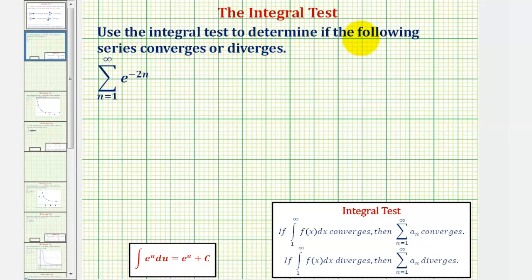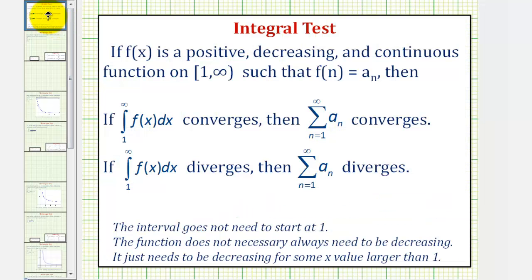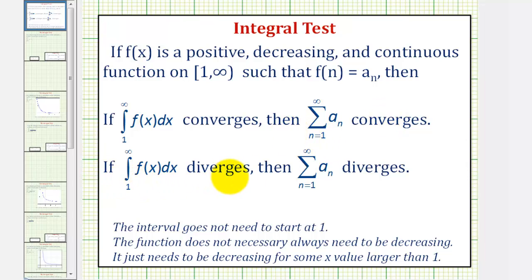We want to use the integral test to determine if the following series converges or diverges. Let's begin by reviewing the integral test. If f of x is a positive, decreasing, and continuous function on the interval from one to infinity, such that f of n equals a sub n, then if this improper integral converges, the infinite series converges, and if this improper integral diverges, the infinite series also diverges.